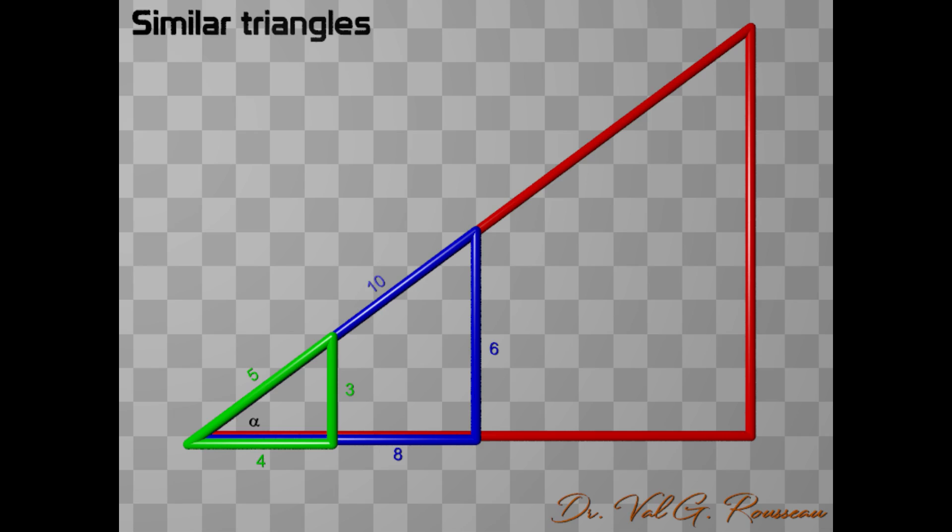Likewise, the red triangle has an adjacent side of 16 squares, an opposite side of 12 squares, and a hypotenuse of 20 squares. Once again, I'll let you check that this is in agreement with the Pythagorean theorem.